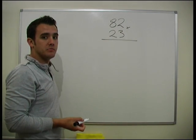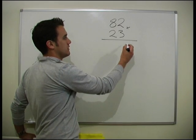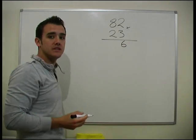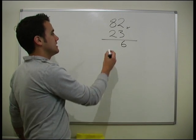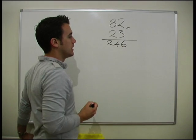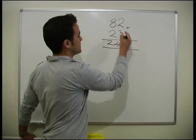So first, 3 times by 2. Fairly straightforward. It's 6. And then 3 times 8. 3 times 8 is 24.